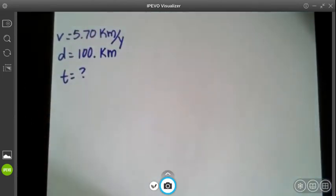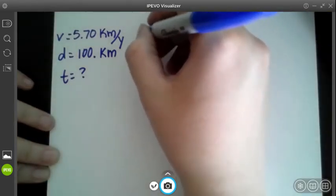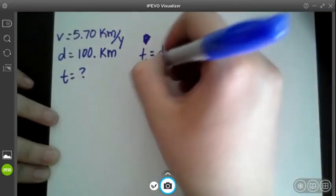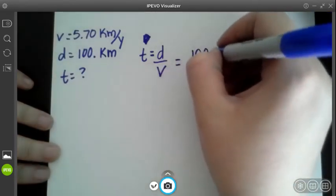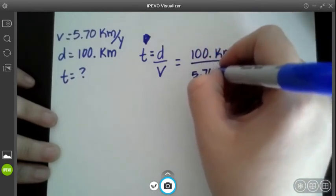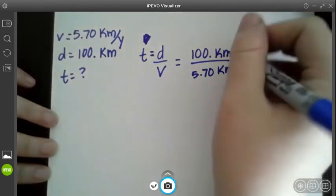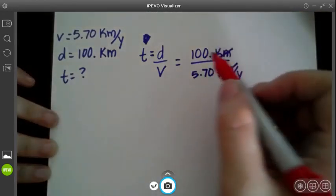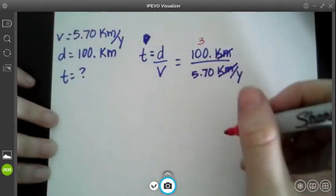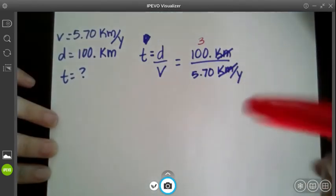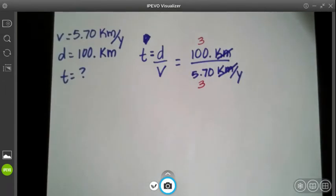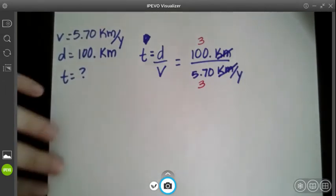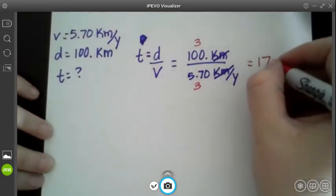So if I look back on my equations, time is going to be t equals d over v. I'm going to plug in my numbers. I have 100 kilometers over 5.70 kilometers per year. These are going to cancel out. So my units will be years. I have 1, 2, 3, 3 sig figs. I have 3 sig figs here and I have 1, 2, 3, 3 sig figs here. I need to figure out how many sig figs do I, my final answer, which will be 3. So if I put this into my calculator, I actually get 17.5 years.